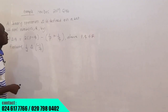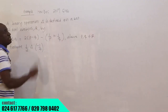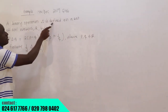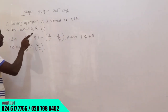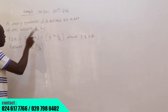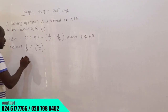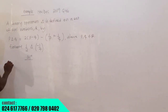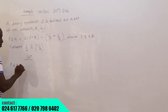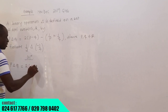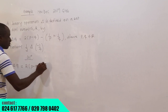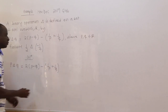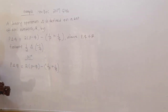Now let's consider this example — WAEC 2019, Question 4. A binary operation delta is defined on the set of real numbers by P△Q = 2P − Q − 1/P + 1/Q. This is the rule given to us.